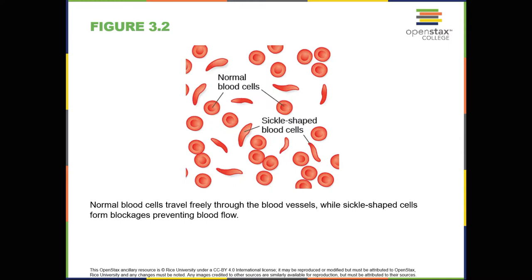However, full-blown sickle cell anemia with two copies of the sickle cell gene does not provide immunity to malaria. While walking home from school, both sisters are bitten by mosquitoes carrying the malaria parasite. Louie does not get malaria because she carries the sickle cell mutation. Senna, on the other hand, develops malaria and dies just two weeks later. Louie survives and eventually has children, to whom she may pass on the sickle cell mutation.